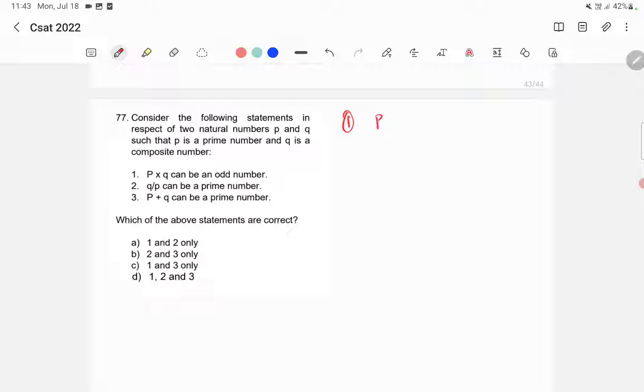Let's assume P is equal to 3. P is a prime number and Q is equal to 9. 9 is a composite number. P into Q, that is 3 into 9, is equal to 27. 27 is an odd number. So statement 1 is correct.